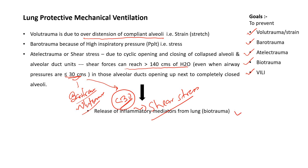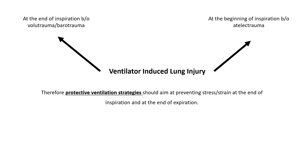All these traumas — volutrauma, barotrauma, and atelectrauma — lead to biotrauma, which is the release of inflammatory mediators from the lung. All these traumas lead to ventilator-induced lung injury, which can occur at end-inspiration due to volutrauma or barotrauma, or at the beginning of inspiration due to atelectrauma. The protective ventilation strategy prevents both stress and strain at end-inspiration as well as end-expiration.